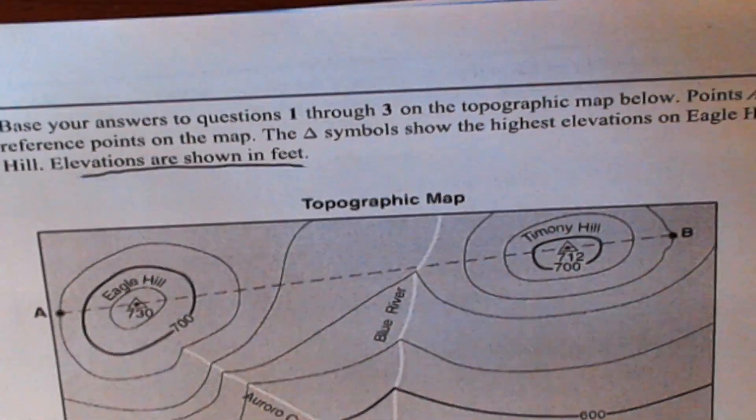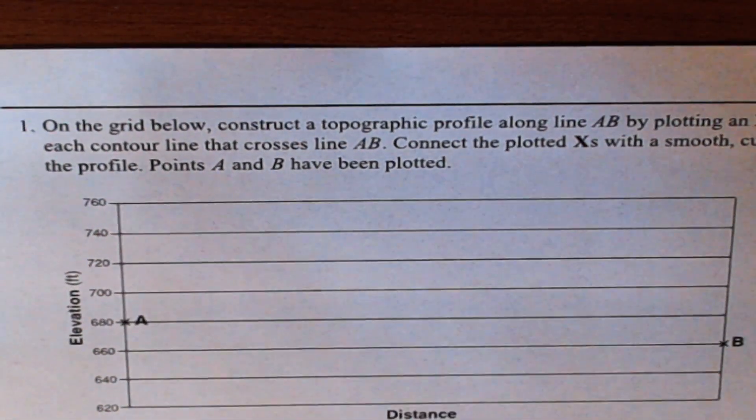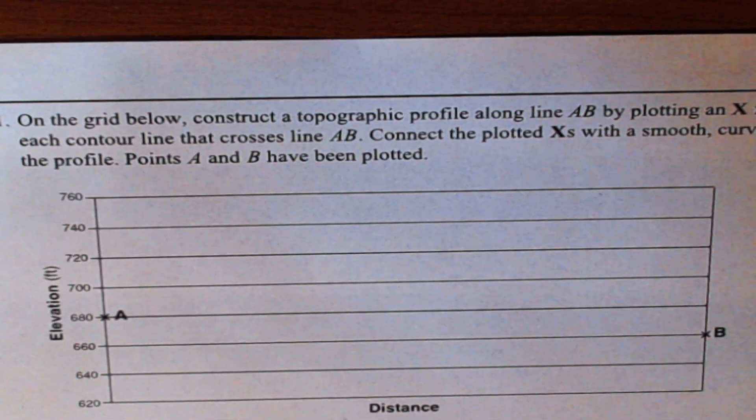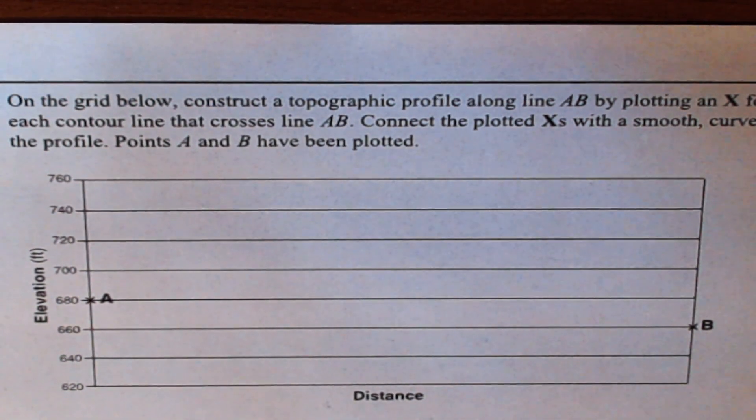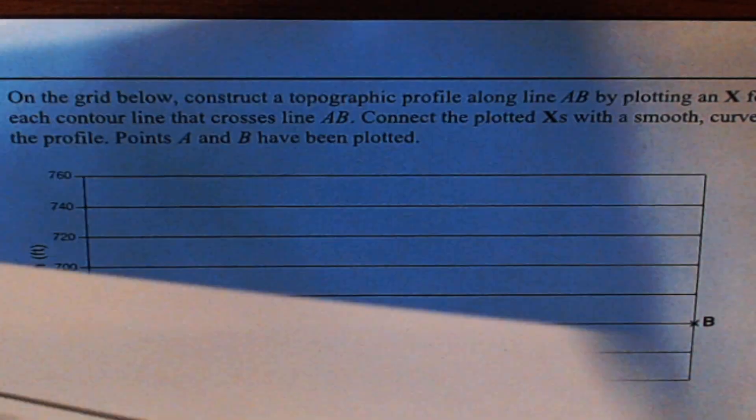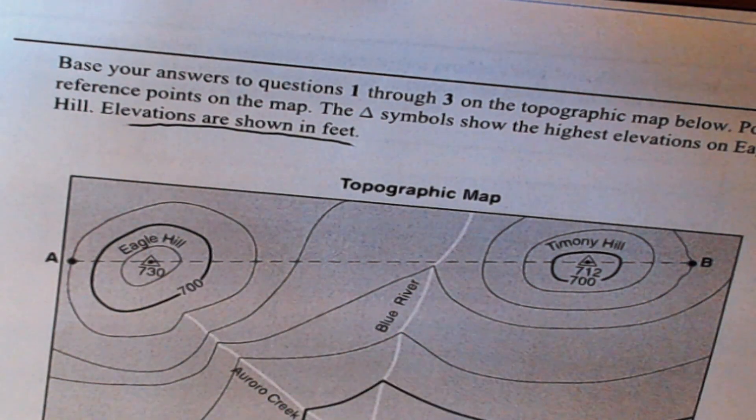So the first question says on the grid below construct a topographic profile along line AB by plotting an X for the elevation of each contour line that crosses line AB. Connect the plotted X's with a smooth curved line to complete the profile. Points A and B have already been plotted for us. So we're going to make a profile on this map. What we're going to do is go to AB right here.